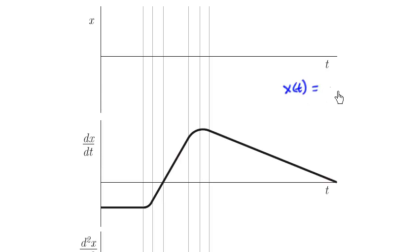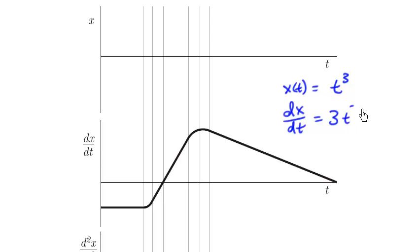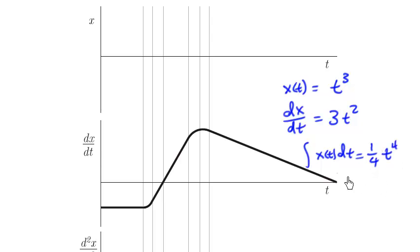t you can think of as time. And let's say x is just t cubed. Then the time derivative of x would just be 3 times t squared. And the integral with respect to time would be 1/4 t to the power of 4. So there's a derivative, there's an integral. But when I say you should know the concepts of derivatives and integrals, I don't mean this — I don't mean being able to follow some recipe and spit out derivatives of nice, very simple functions.